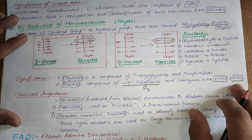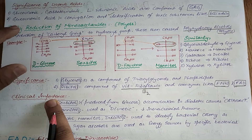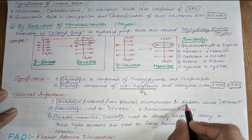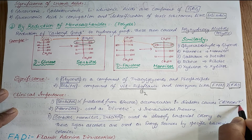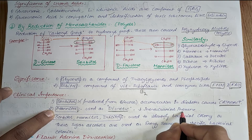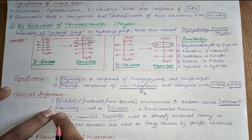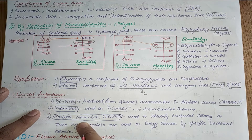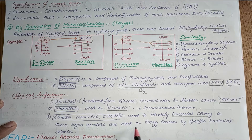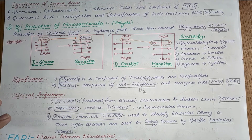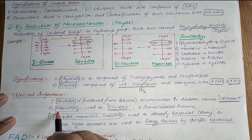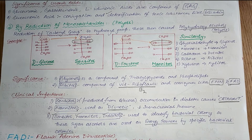Clinical importance of reduction of monosaccharides: sorbitol is produced from glucose, and its accumulation in diabetes causes cataract. Mannitol is used as a diuretic because it decreases intracranial pressure. Sorbitol, mannitol, and dulcitol can also be used to identify bacterial colonies, as specific bacteria use these sugar alcohols as energy sources, reducing monosaccharides to form these products.